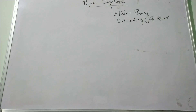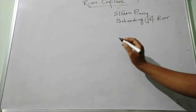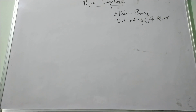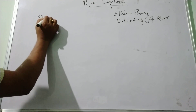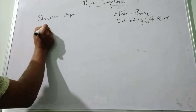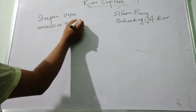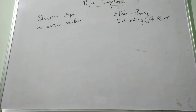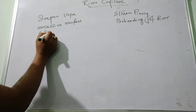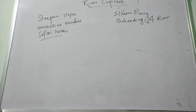River capture is generally found due to rejuvenative topography. There are several responsible factors like steeper slope, excessive rainfall, and comparatively softer rocks. These are the factors that are important to develop river capture.